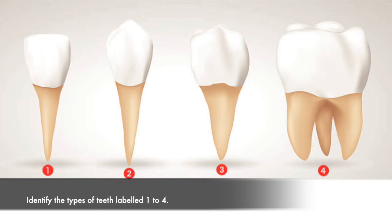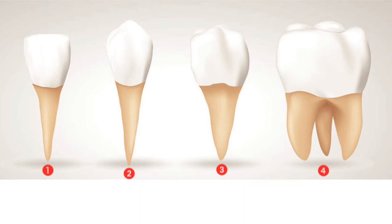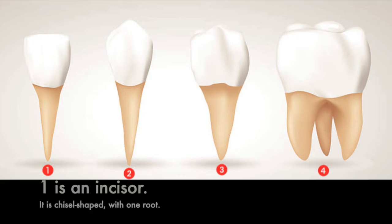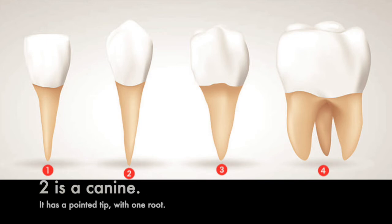Identify the types of teeth labeled 1 to 4. 1 is an incisor — it is chisel shaped with one root. 2 is a canine — it has a pointed tip with one root.